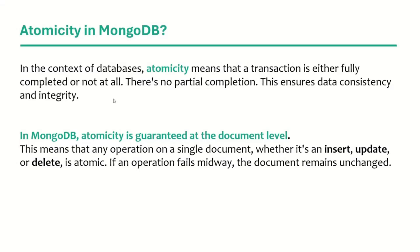To summarize: in the context of databases, atomicity means that a transaction is either fully completed or not at all — there is no partial completion — ensuring data consistency and integrity. In MongoDB, atomicity is guaranteed at the document level, meaning any operation on a single document, whether insert, update, or delete, will be atomic. If an operation fails midway, the document remains unchanged.